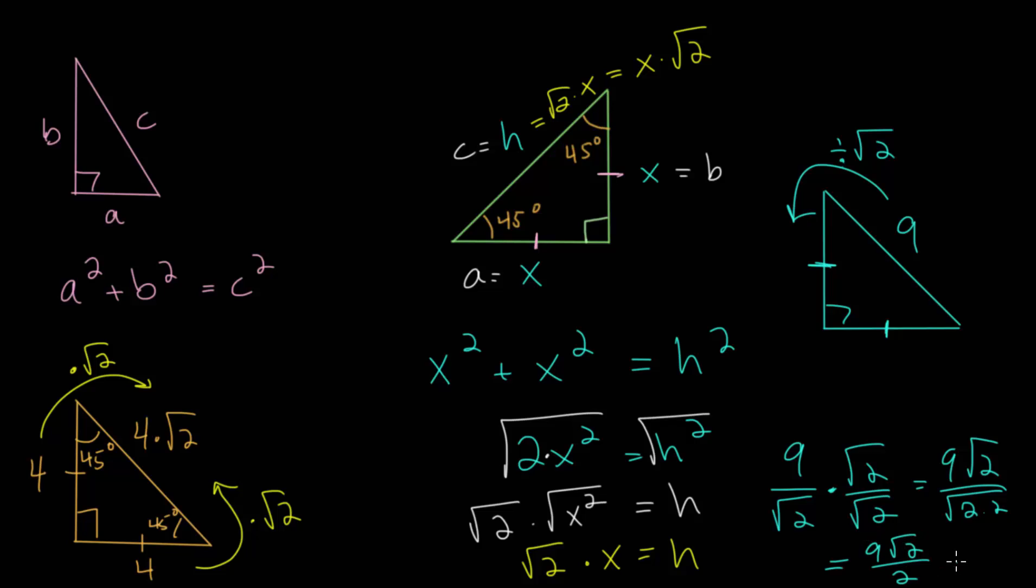And the square root of 4 is just 2. So we get 9 halves times by the square root of 2. Or you can even write it as 4.5 root 2. But that would give us the side lengths here. And if you forget the pattern, you can always use the Pythagorean theorem. So for instance, let me just look at one more example here.